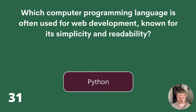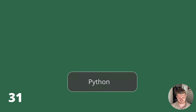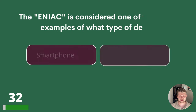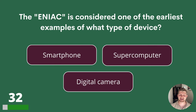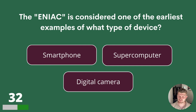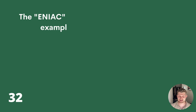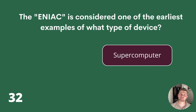Well done if you got that one! Question 32. ENIAC is considered one of the earliest examples of what type of device? Smartphone, Supercomputer or Digital Camera? The answer is Supercomputer.